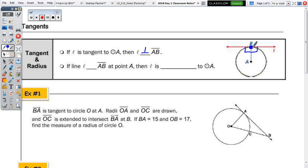So, if line L is perpendicular, then line L is tangent to circle A. So, right angles. Okay, watch out for those right angle, right triangle properties.